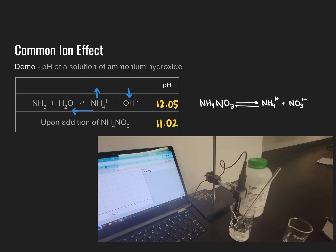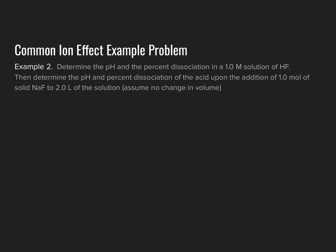That demonstrates the Common Ion Effect in action. Moving to our final slide: example number two asks us to determine the pH and percent dissociation in a 0.10 molar solution of hydrofluoric acid (HF), and then find the pH and percent dissociation upon addition of 1.0 mole of solid sodium fluoride to 2 liters of that solution, assuming no change in volume. We'll start by using an ICE table.